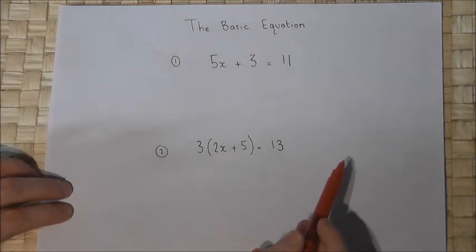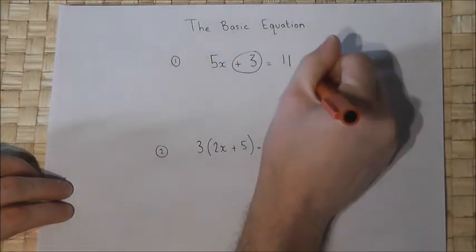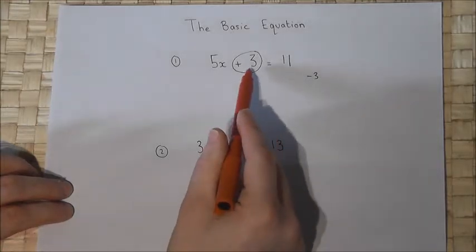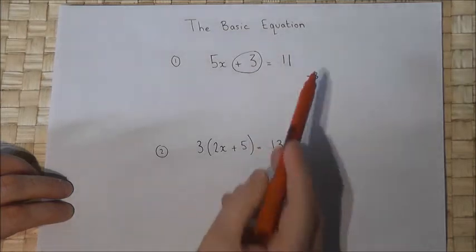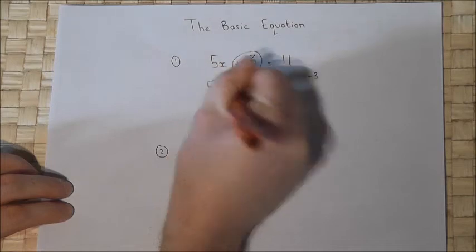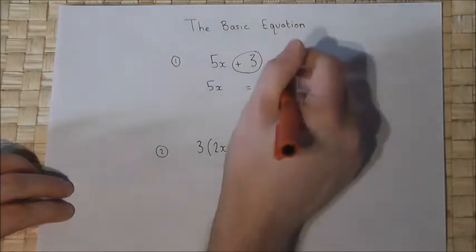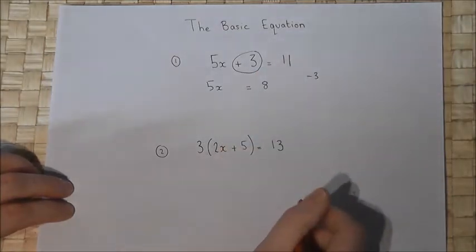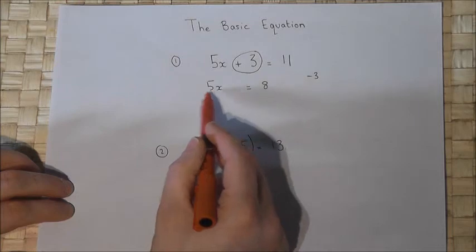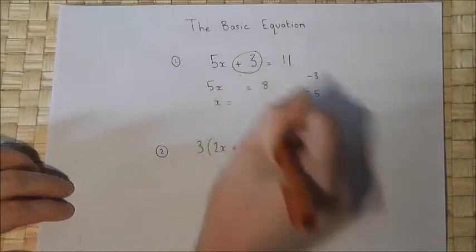Here we have a plus 3 in the equation, so if I take 3 from both sides of the equation then the plus 3 will cancel off. On the left I'm left with just 5x, but on the right I have 11 take 3 equals 8. So 5 lots of x equals 8, and then to find x I divide by the coefficient of x which is 5.